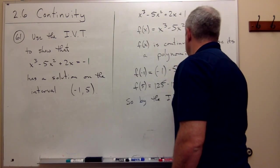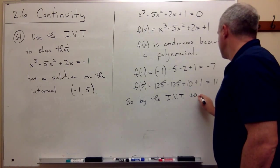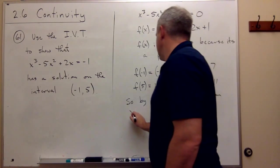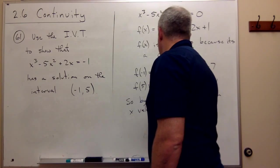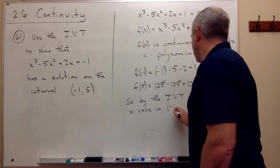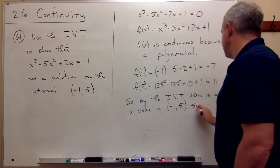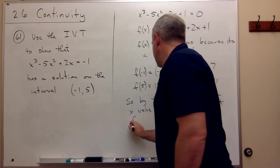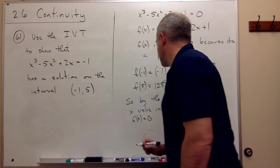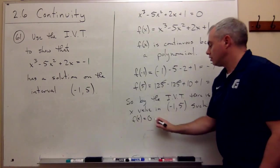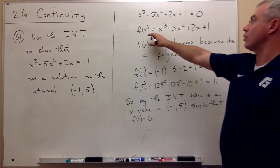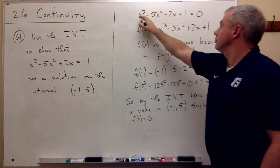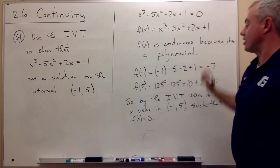there is an x value in the interval from negative 1 to 5 such that f of x equals 0. But if there's a place where f of x is 0, that means that this is equal to 0. And if this is equal to 0, I can say,